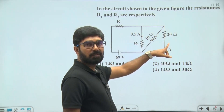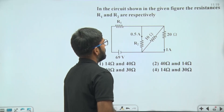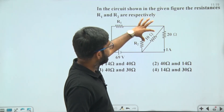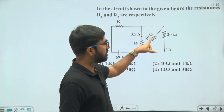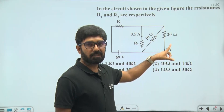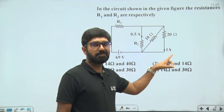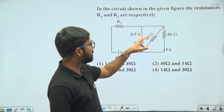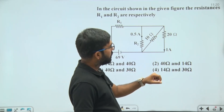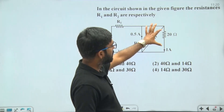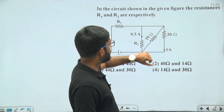Resistance R2, 10 ohm, and 20 ohm — these three resistances are in parallel. Therefore, the potential difference across each resistance will be the same. We can say that the potential difference across the 20 ohm resistance is equal to the potential difference across R2.